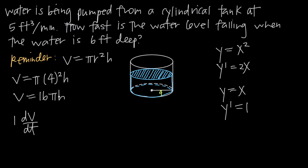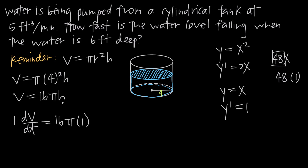When we take the derivative of 16πh, we recognize that 16π is a constant — it's going to stay. The derivative of h is 1, but because h is not technically an independent variable, we multiply by dh/dt, since we're taking the derivative with respect to time. So every time we take the derivative of one of these variables, we treat it like x but then multiply by dV/dt or dh/dt, using dt in the denominator.